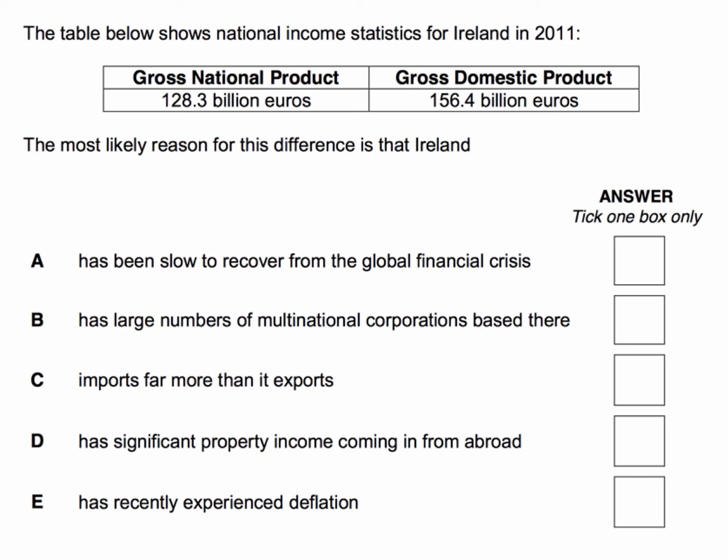So in Ireland's case, GDP is higher than GNP. We're looking for the most likely reason for the difference.